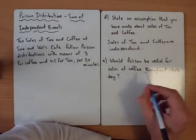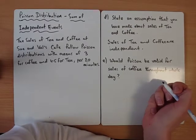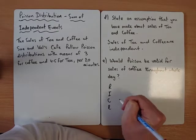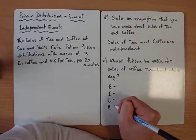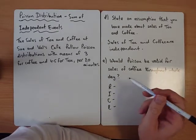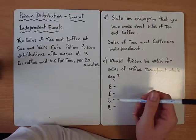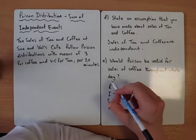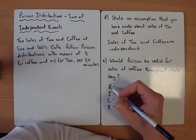And then it says, would the Poisson be valid for the sales of coffee throughout the whole day? So when we get a question like this, just think RICKLE. Is it random? Is it independent? Is it a constant average rate? And is it limitless? Because for a Poisson to be valid within the context, you've got to think RICKLE.